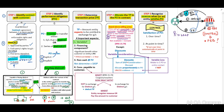A performance obligation can be either explicit or implicit. Explicit refers to the contract — our legal obligation. Implicit refers to a constructive obligation, which arises when an action by the entity creates an expectation for the customer. Our performance obligation or promise can be based on the terms and conditions of the contract or based on a constructive obligation — an action by the entity that created an expectation for the customer.